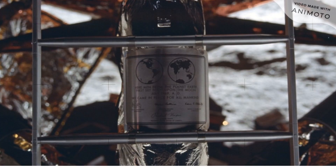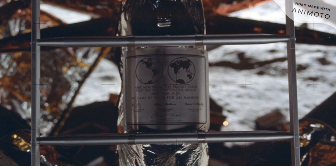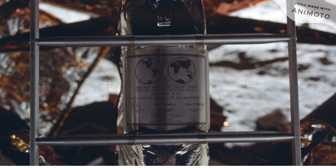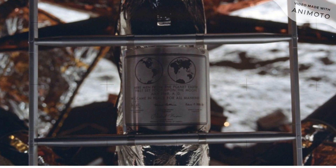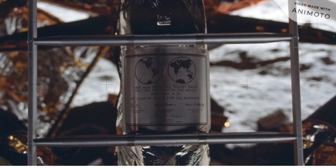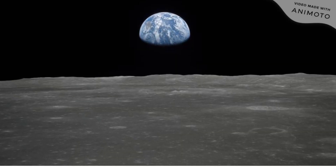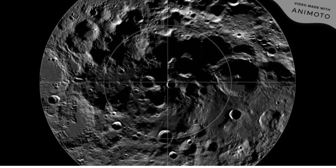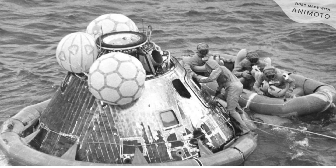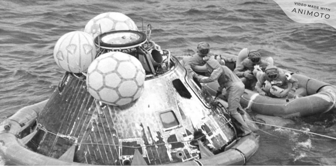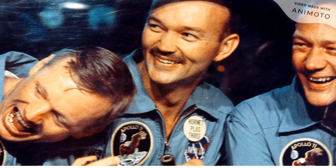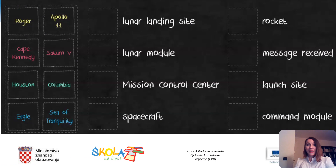The prospect of Armstrong and Aldrin being stranded on the moon was real enough that the president's office had a condolence speech prepared, which began: 'Fate has ordained the men who went to the moon to explore in peace will stay on the moon to rest in peace.' Man's first dramatic venture on the lunar surface ended at 1:54 p.m. July 21st. Among the items left on the surface was a plaque that read: 'Here are men from the planet Earth who set foot on the moon, July 1969 A.D. We came in peace for all mankind.' Armstrong and Aldrin lifted off from the moon, rejoined Eagle to Columbia, returned to Columbia, and cast Eagle adrift. The Apollo 11 mission concluded exactly eight days, three hours, 18 minutes, and 35 seconds after launch with a splashdown in the Pacific Ocean.